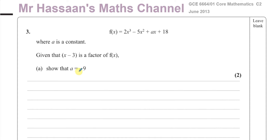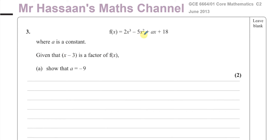Question 3, part A: f(x) equals 2x cubed minus 5x squared plus ax plus 18, where A is a constant. Given that x minus 3 is a factor of f(x), show that A equals negative 9. So when something is a factor of a polynomial — a linear factor — whatever makes that factor equal zero will also make the whole polynomial equal zero.